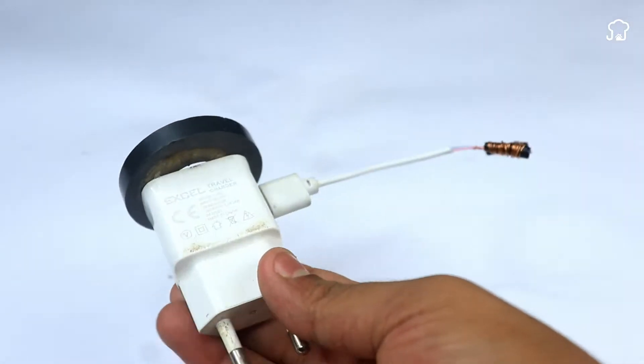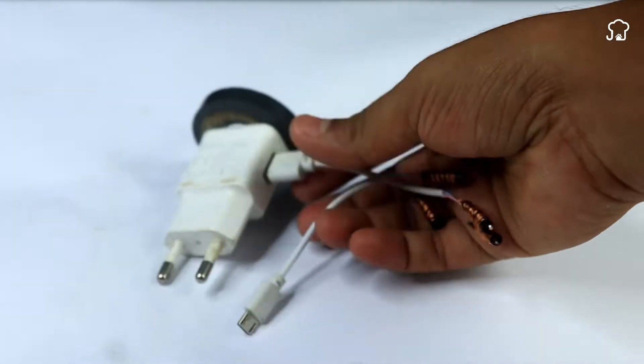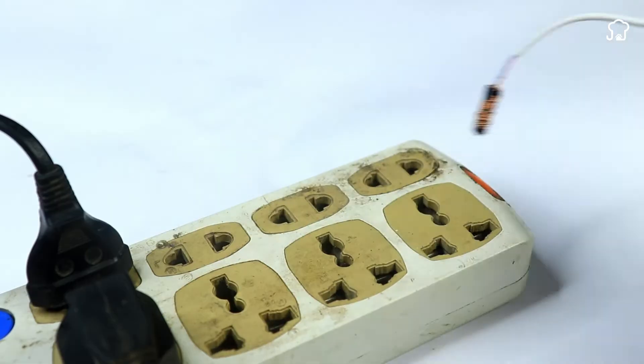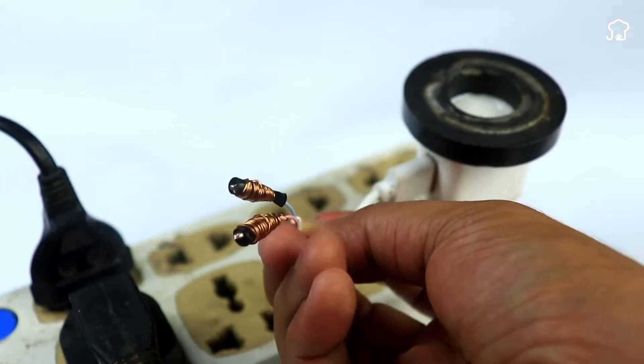To use this improvised device, simply place the set of cables near the charger with the magnet on it. The induced magnetic energy will begin to flow through the wires, allowing the charge of your cell phone.